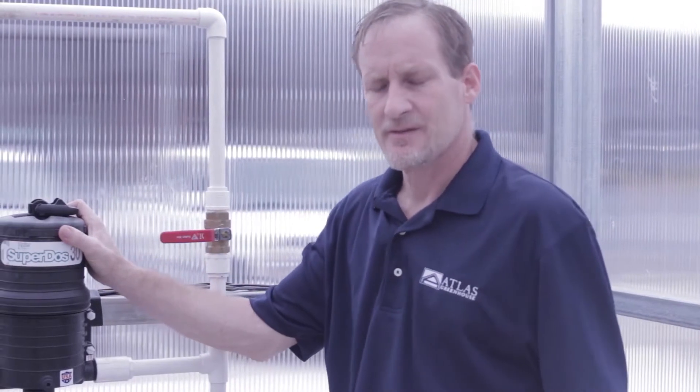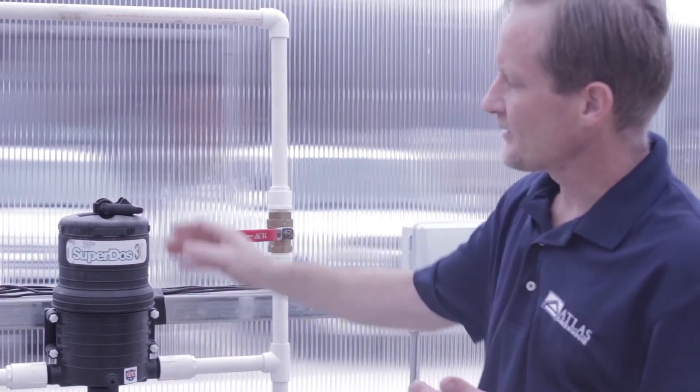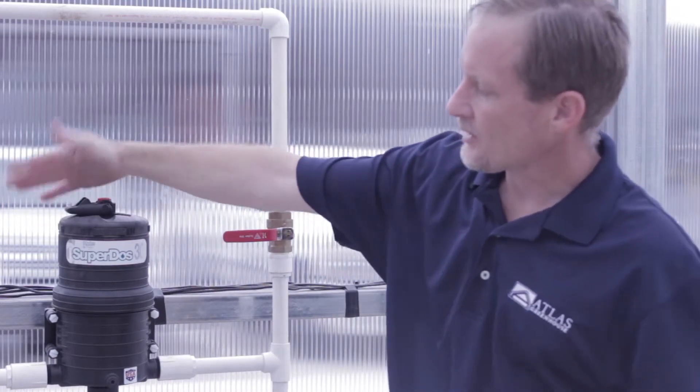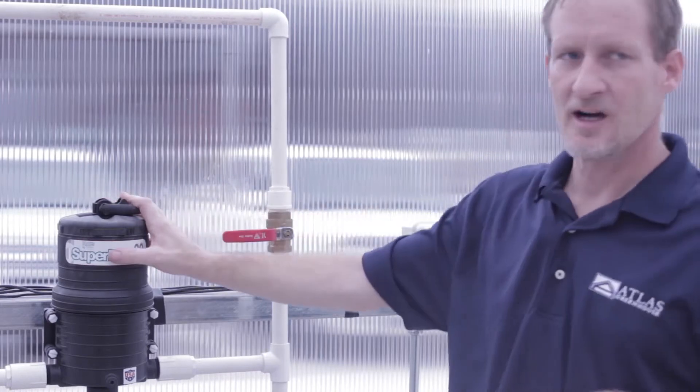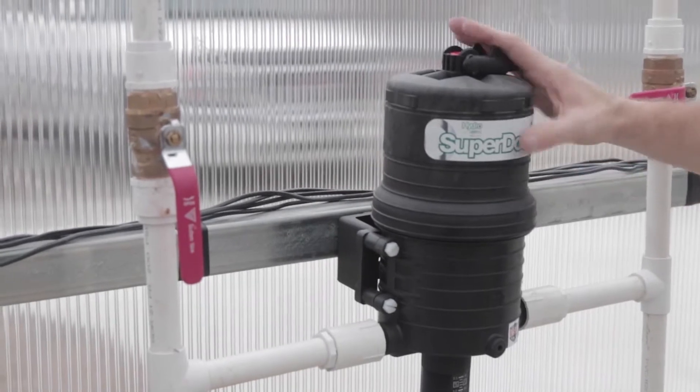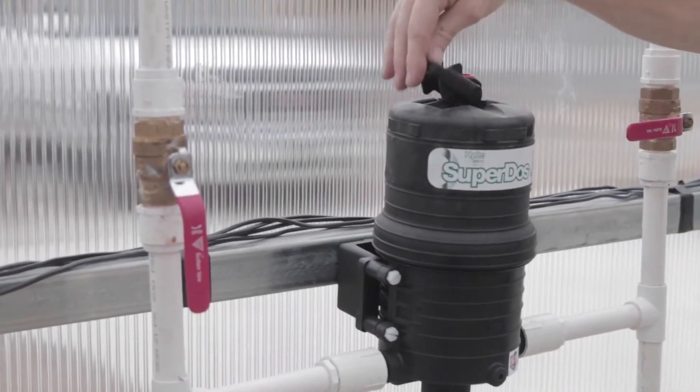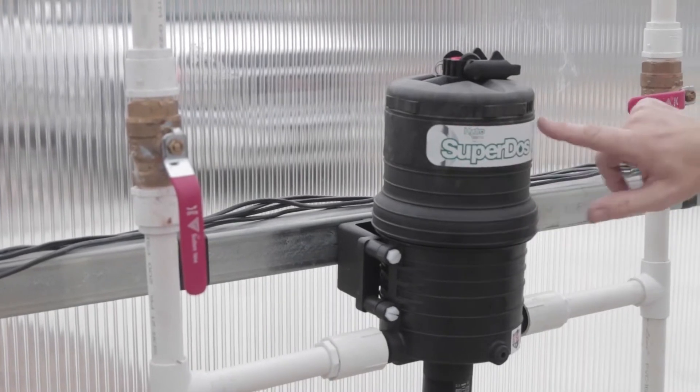This is your fertilizer injector. There's really not a whole lot of maintenance to do with this. It's a simple on and off operation here on top. Make sure it's in the on position. That's sometimes a common question, my injector's not working, just make sure that the valve on top is in the on position. It specifies off and on.